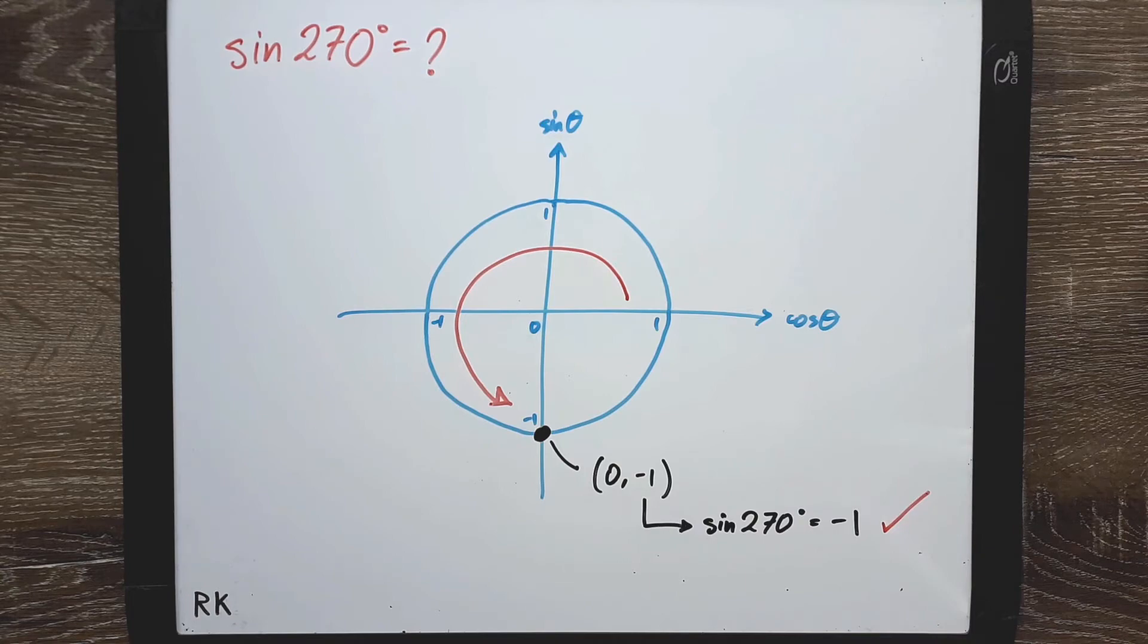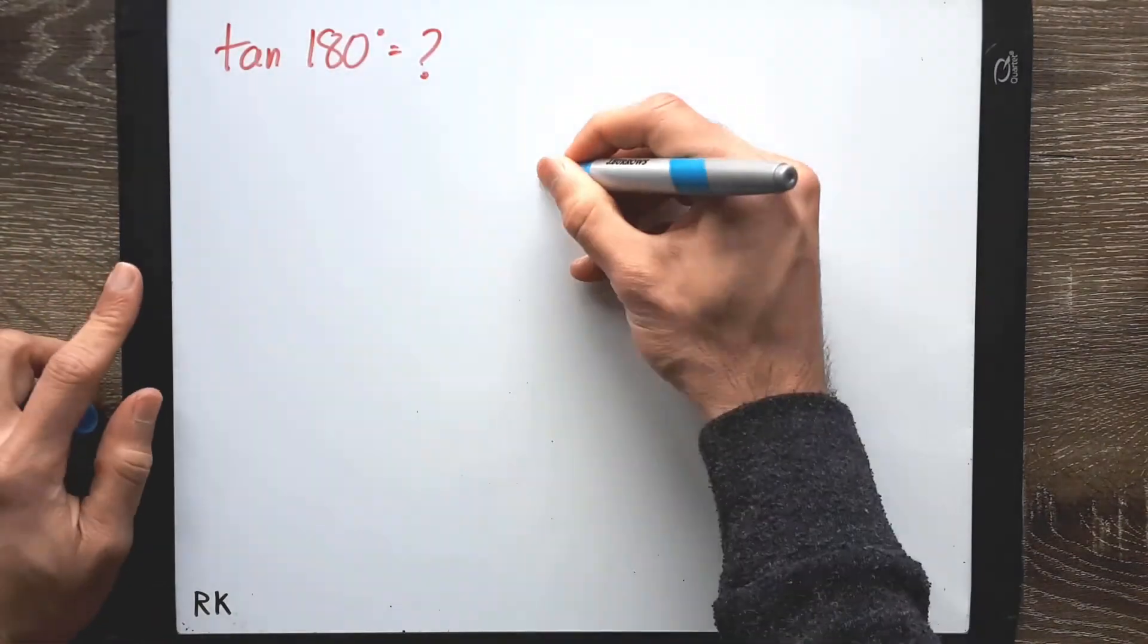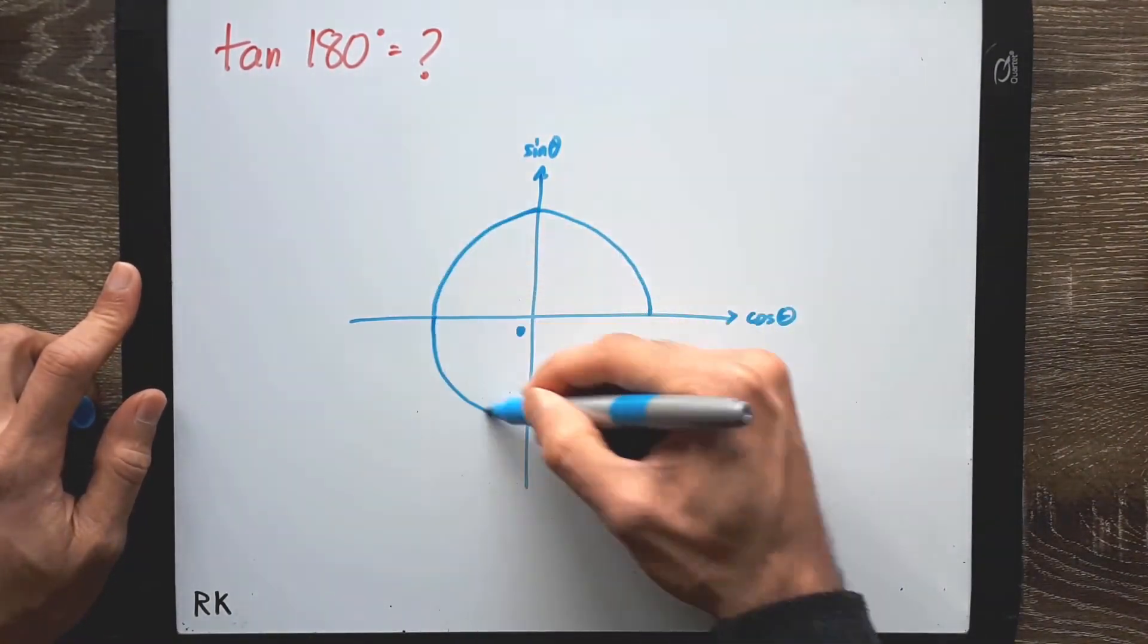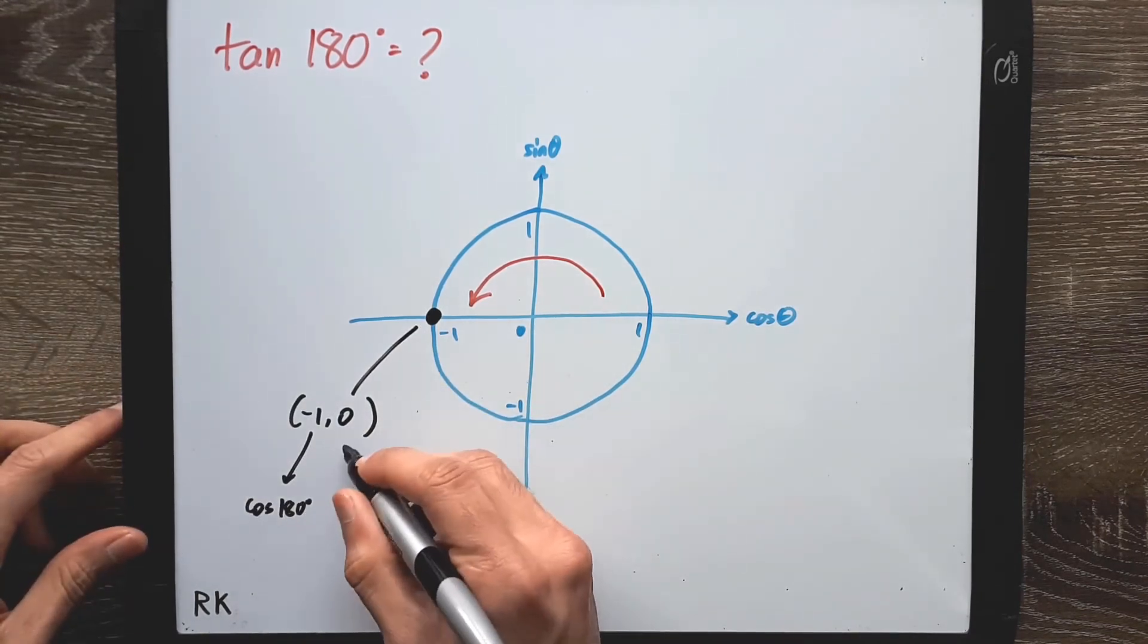But what if we wanted to work out tangent ratios, like tangent 180? Tangents aren't displayed anywhere. On your unit circle, the angle would be at this point, negative 1 comma 0. But this is only giving you cos and sin, right?